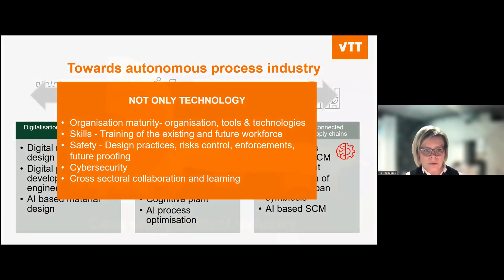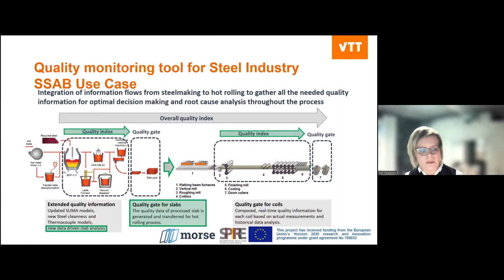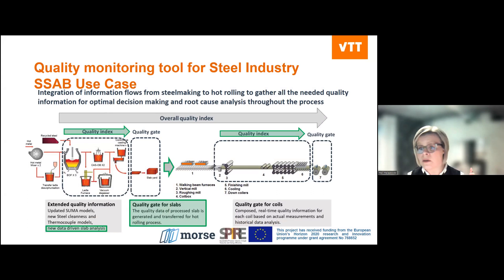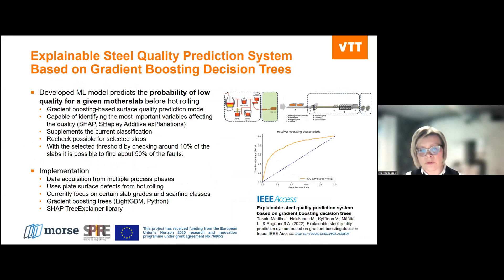I would like to show you one case study we have conducted in the steel industry. This is a practical case study where we wanted to improve the quality of steel industry products — specifically focused on slabs. We developed a quality gate for slabs — how to predict the quality of slabs before they go to the hot rolling mills. We developed an explainable steel quality prediction system based on gradient boosting trees. In a testing period at the SSAB factory, by checking around 10% of the slabs, it was possible to find about 50% of the faults.